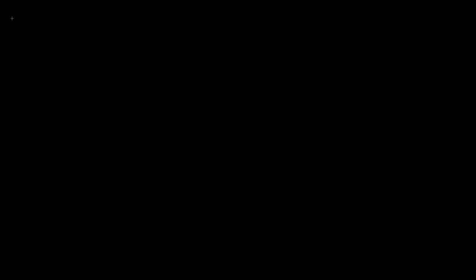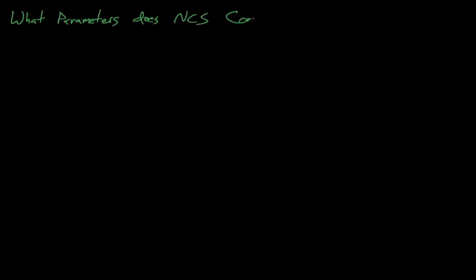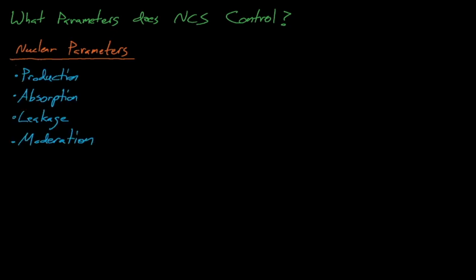So what criticality related parameters do we control for in nuclear criticality safety? We'll discuss this in much more detail in the next lecture, but if we recall lecture two, we'll remember that we need to protect against perturbations to the Boltzmann transport equation, which occur by changing the production, absorption, leakage, or moderation terms, the terms from the PALM acronym.